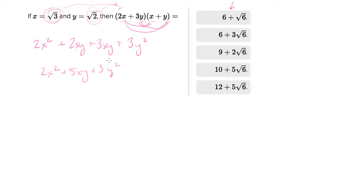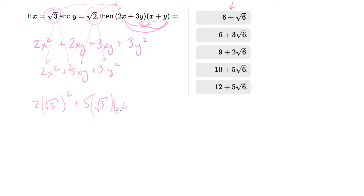This simplified form is much more preferable for plugging in. So let's substitute √3 for the X's and √2 for the Y's. We get 2(√3)² plus 5(√3)(√2) plus 3(√2)².